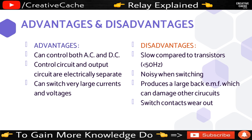The advantages include: AC current and DC current operations. The control circuit and output circuit are electrically separate. So if you control the current and voltage, you can separate them. You can switch very large currents and voltages, and the relay can handle them. As a disadvantage, the systems are slow compared to transistors.